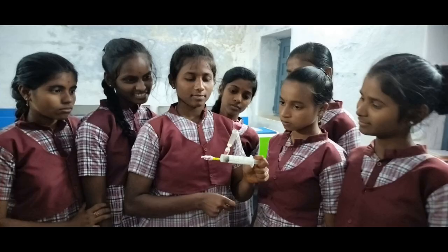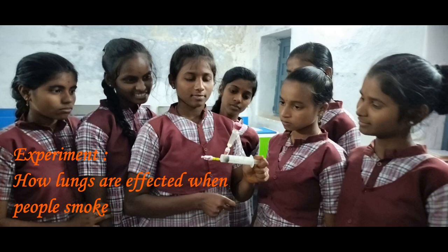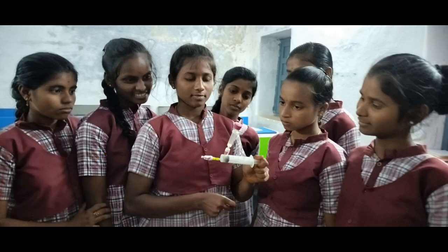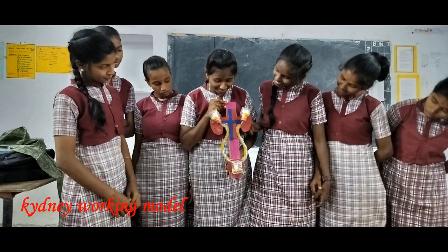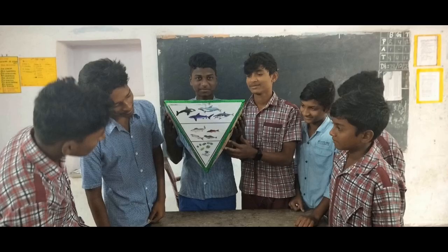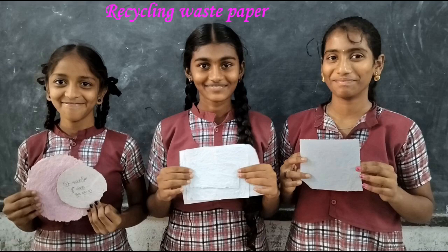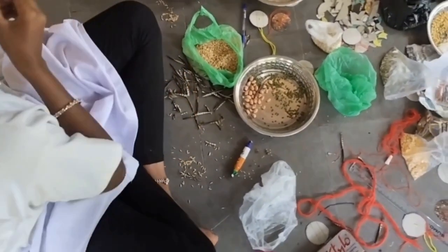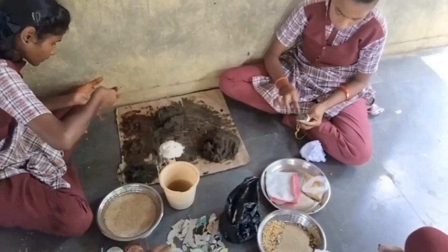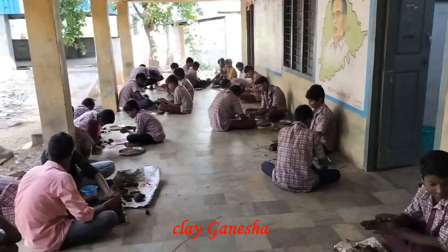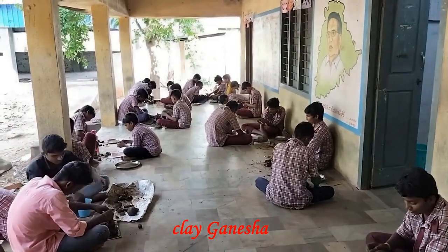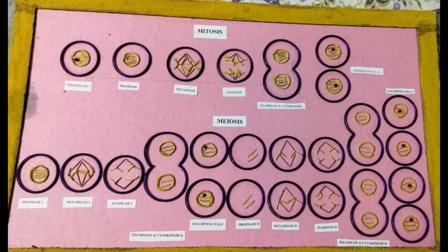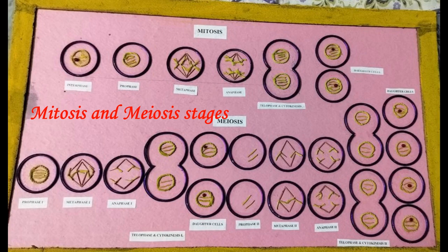Model making develops creative thinking and creativity in students. Models created include one showing how lungs are affected when people smoke, a double circulation model, a kidneys working model, a food pyramid, and an ecological pyramid model. Students also recycle waste paper at home and prepared eco-friendly seed rakhis at school, with every student participating. Clay Ganesha idols were prepared before Vinayaka Chaturthi. Using bangles and thread, students and the teacher prepared a beautiful model of mitosis and meiosis stages.